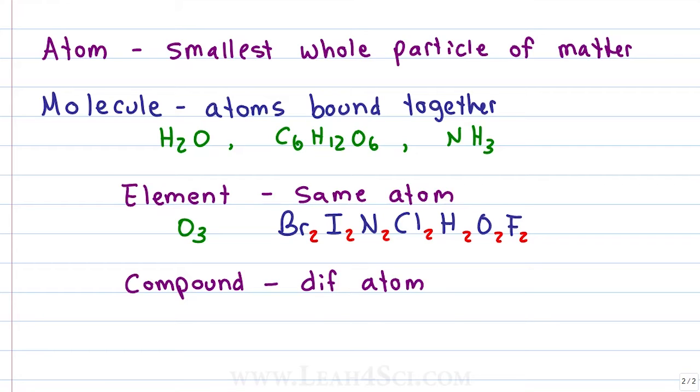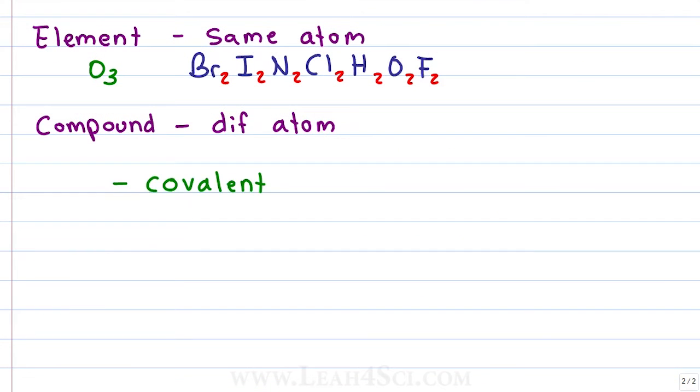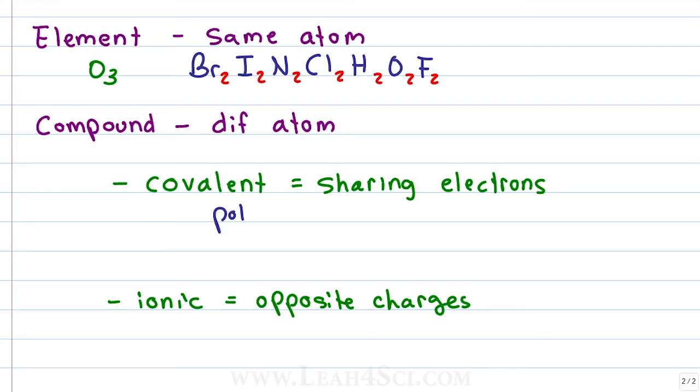Compounds are made up of different types of atoms, so we classify them by how atoms are bound together. Covalent compounds form when two atoms share electrons. Ionic compounds form when opposite charges attract—they're not sharing electrons but holding on to each other because one is positive and one is negative. Covalent compounds can be polar or non-polar. Polar, or pulling, happens when atoms sharing electrons don't share them equally, so one pulls slightly more than the other.